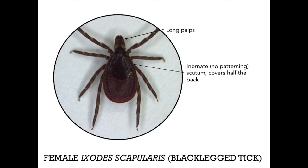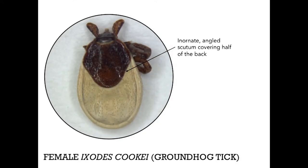As you see in this picture, Ixodes scapularis has long palps and an inornate scutum — this solid brown area. And as you see, because the scutum is only half the back, this is a female tick. The next species is Ixodes cookii, or the groundhog tick. The biggest differentiation between this tick and the black-legged tick is the fact that the scutum is quite angled versus oval with the black-legged tick.